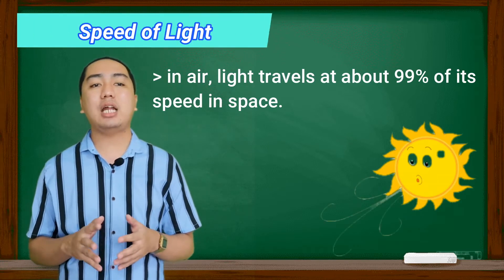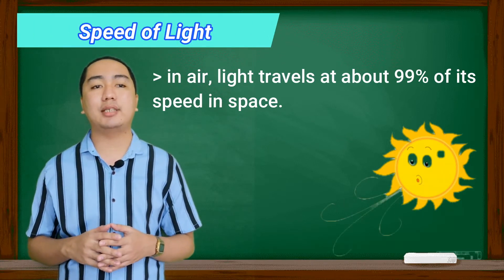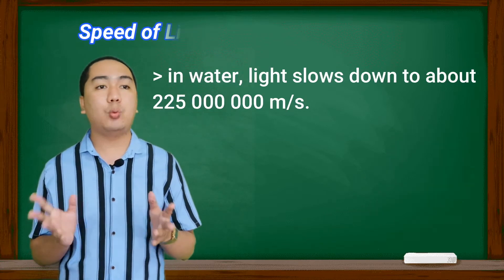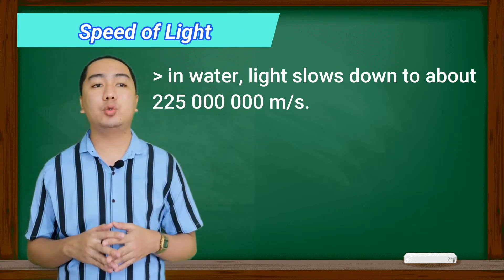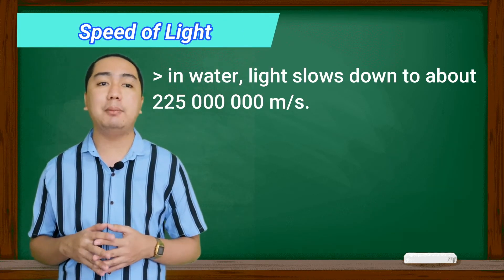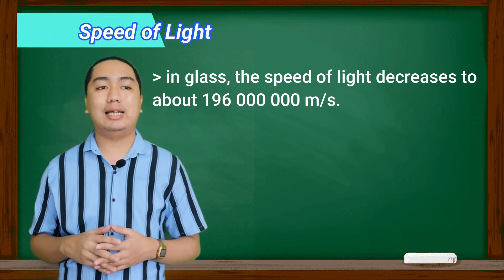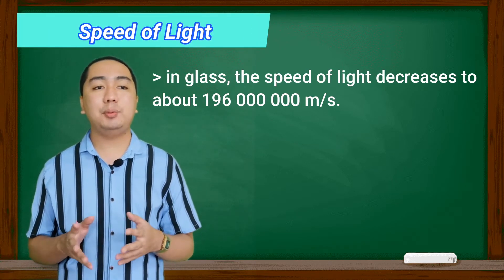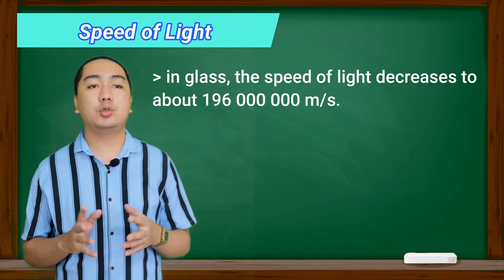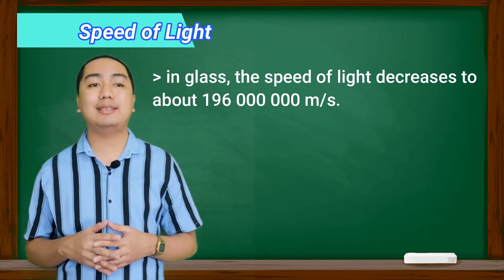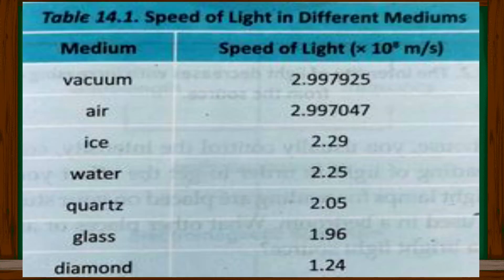In air, light travels about 99% of its speed in space. In water, light slows down to about 225 million meters per second. And through glass, the speed of light decreases to about 196 million meters per second. Here is the table that shows the speed of light in different mediums.